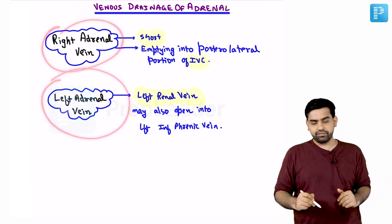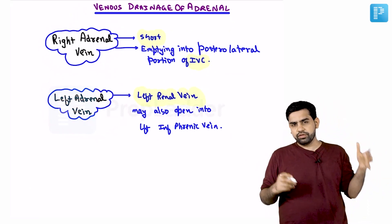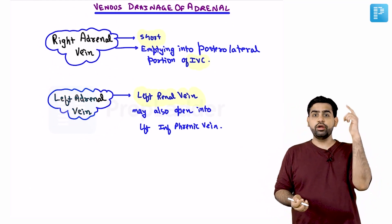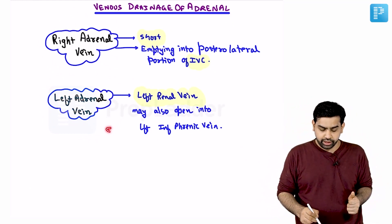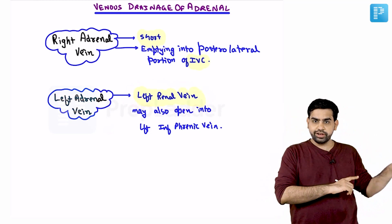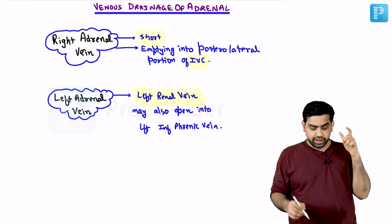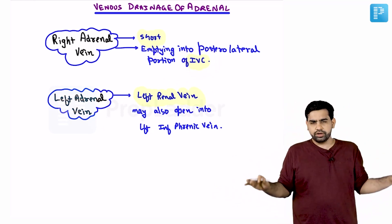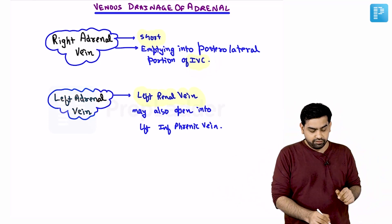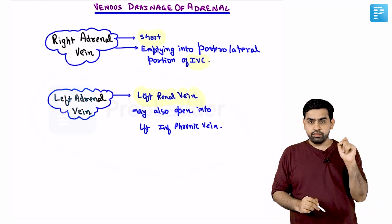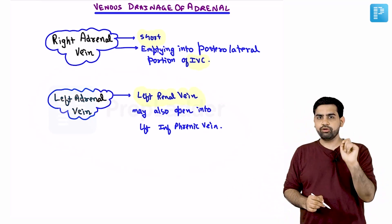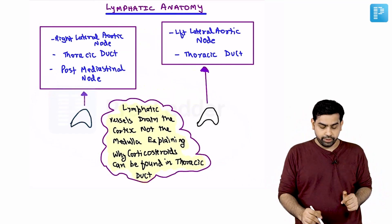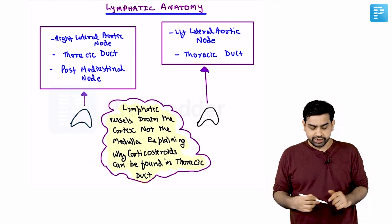The left adrenal vein is a tributary of the left renal vein and drains into it. The right adrenal vein is shorter and directly enters the inferior vena cava. The left adrenal vein connection to the left renal vein is the reason that even if you accidentally ligate the left renal vein, the kidney will not die because of these tributaries.